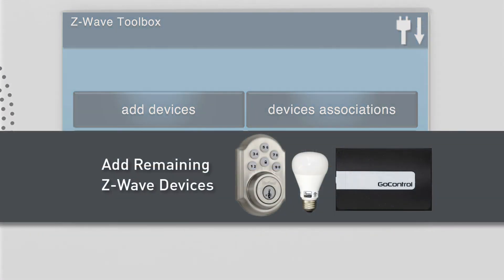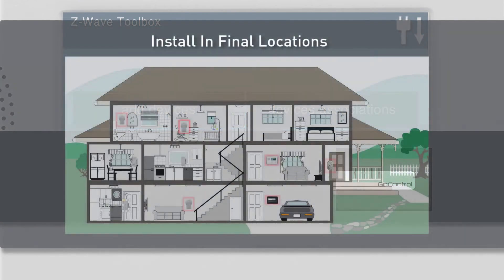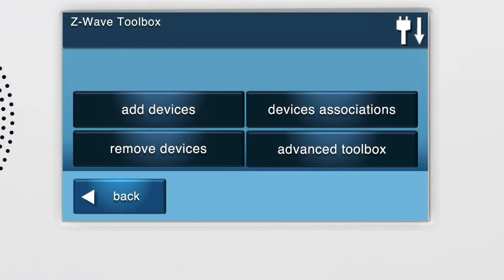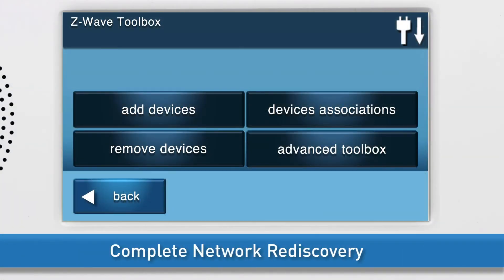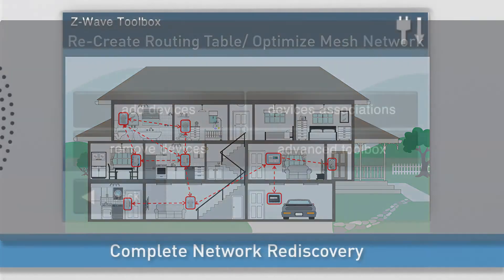If you have any remaining Z-Wave devices, you can add them now. Then install the panel and all Z-Wave devices into their final locations. Lastly, complete a network rediscovery. During network rediscovery, the panel will recreate its Z-Wave Routing Table and optimize the mesh Z-Wave network.